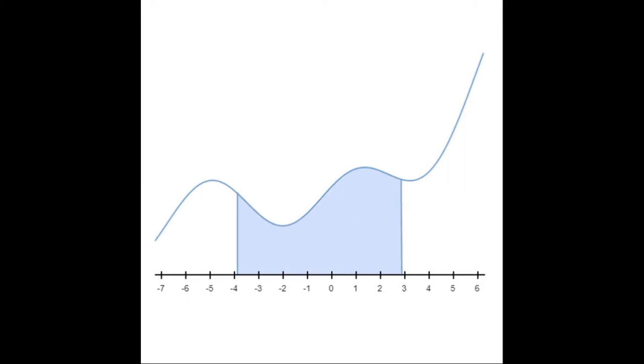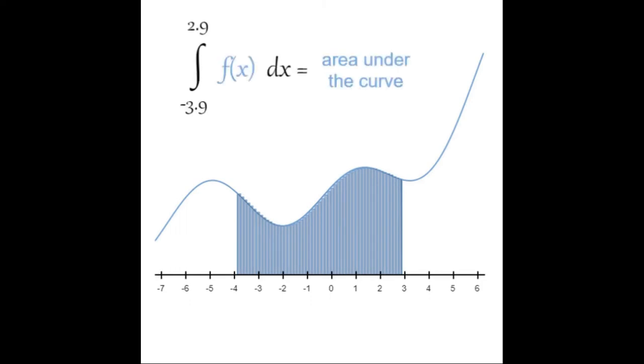Now suppose we want to find the area between the curve and the number line. One way we could do that is by breaking up the area into a bunch of skinny rectangles and adding up their areas. The more rectangles we have, the closer the area of the rectangles is to the actual area under the curve. What integrals do is sum up the area of an infinite number of tiny rectangles to find out the exact area under the curve.